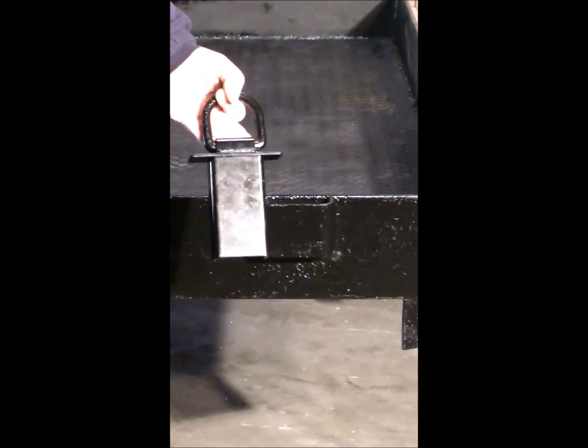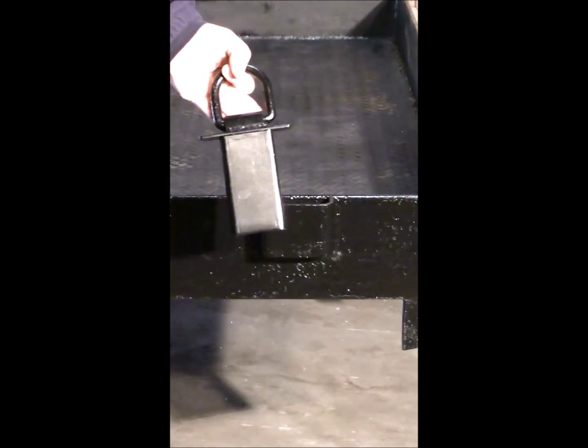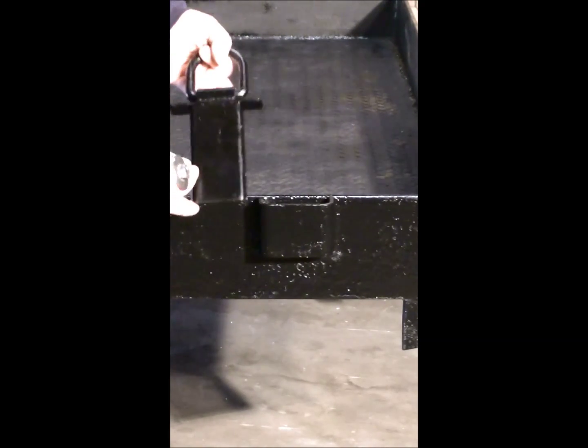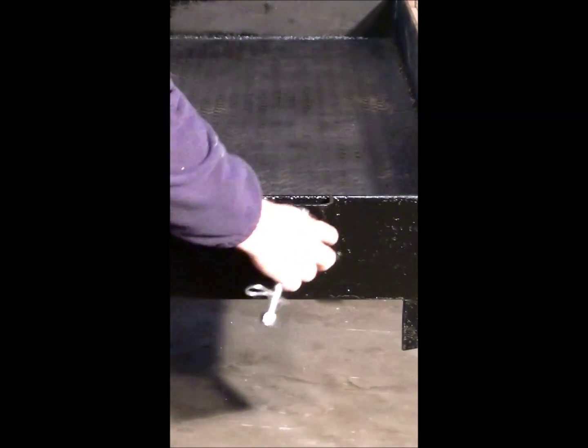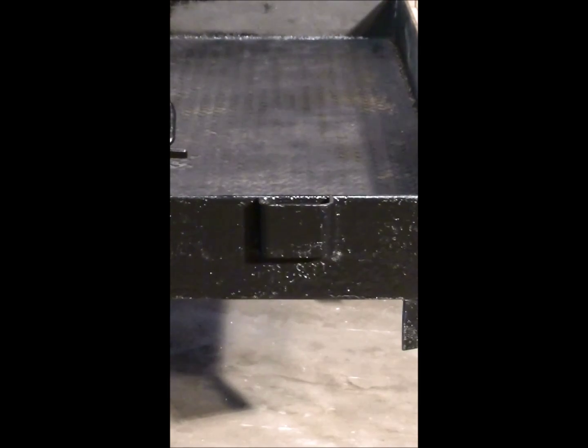We've come outside to a trailer so I can show you how the stake pocket tie down works. It's very simple, it just slides into the stake pocket. This trailer has a welded-in stake pocket. Stake pockets also come as bolt-ons and this will work on either type.